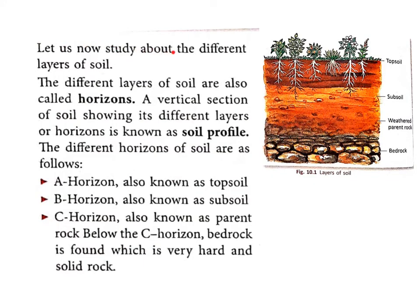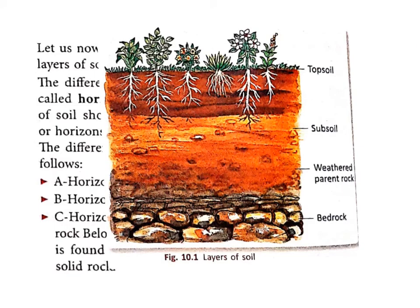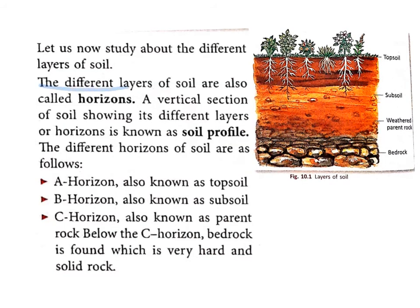Let us now study about the different layers of soil. Please observe figure 10.1 — layers of soil — carefully. The different layers of soil are also called horizons. A vertical section of soil showing its different layers or horizons is known as a soil profile.